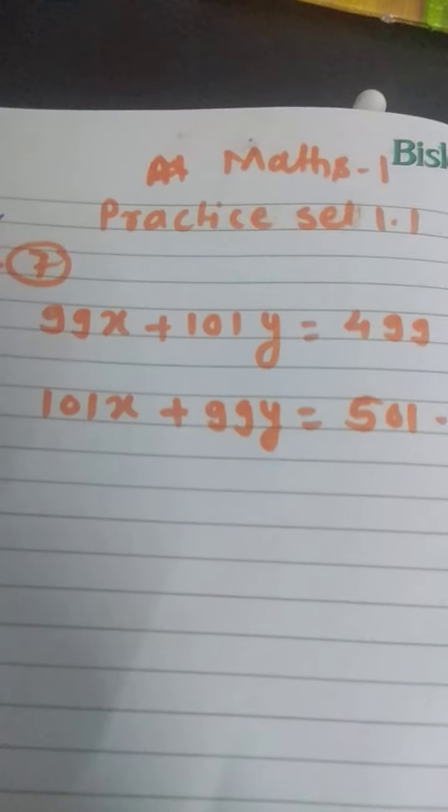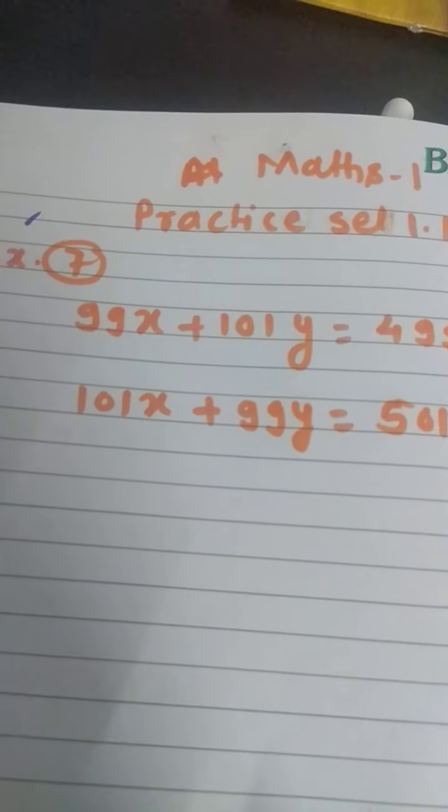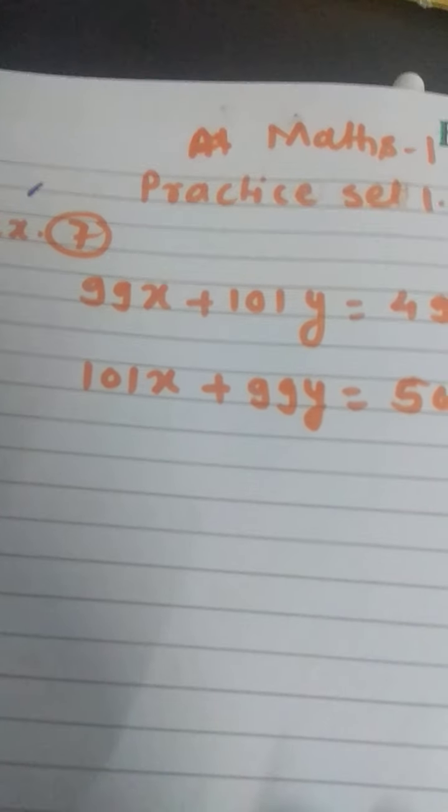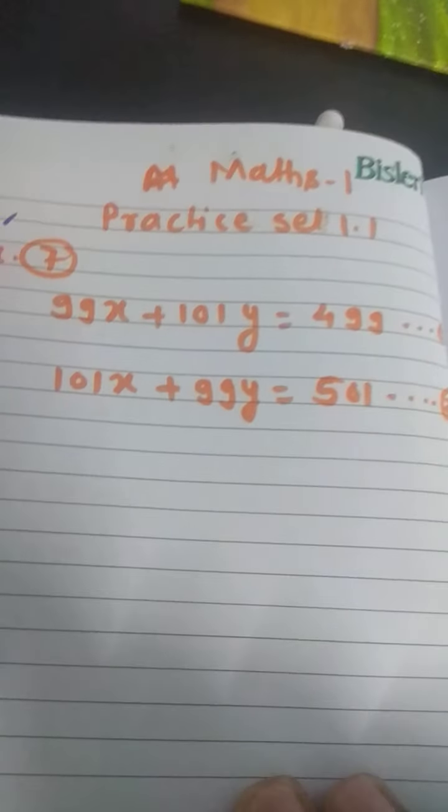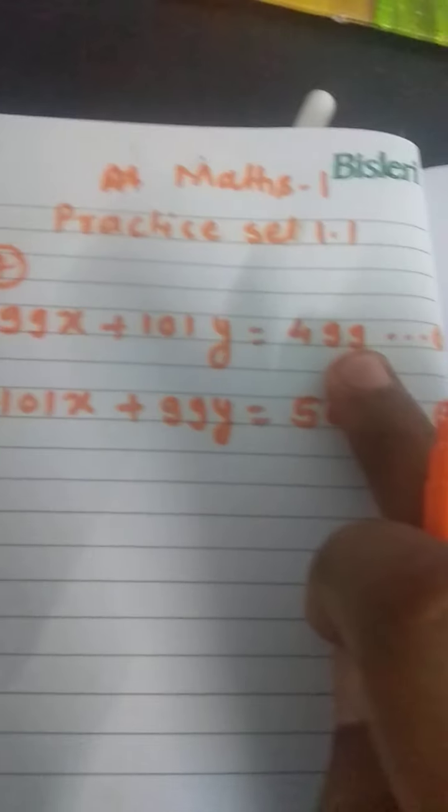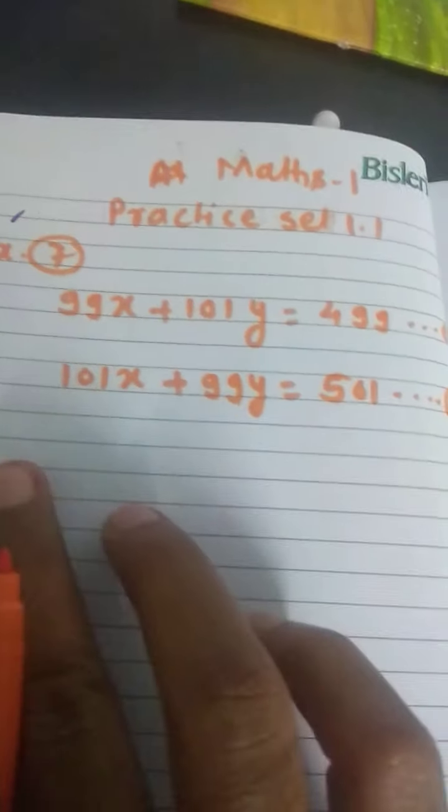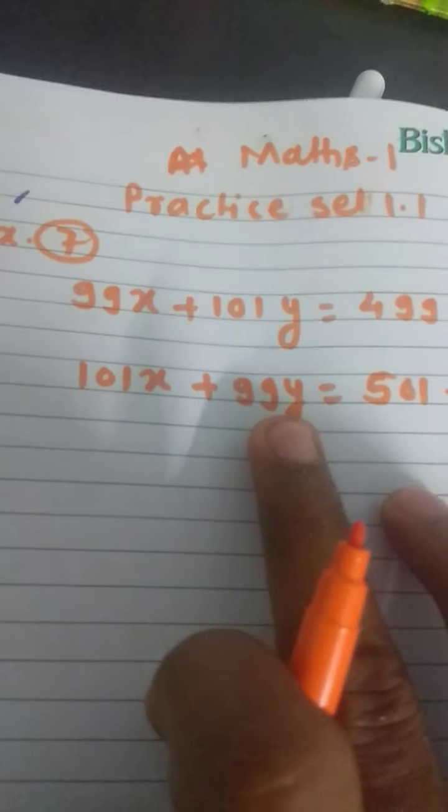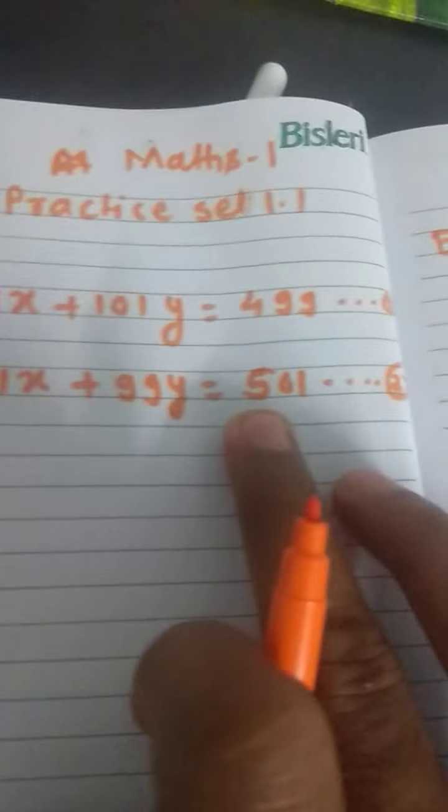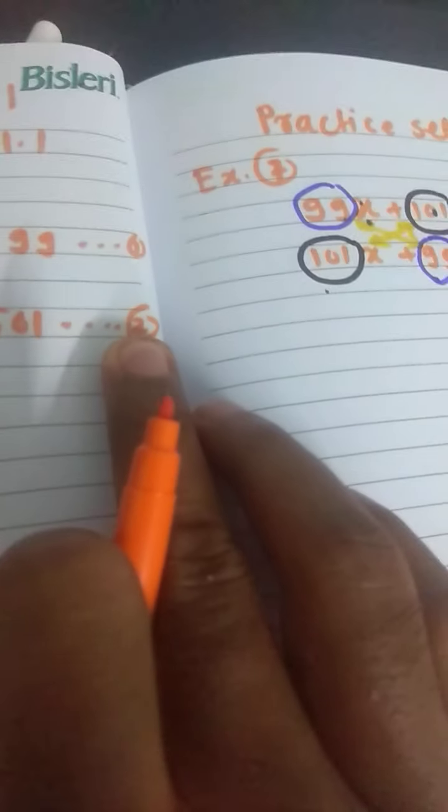Maths 1, Practice Set 1.1, Example number 7. 99x plus 101y equals 499, Equation 1. And 101x plus 99y equals 501, Equation 2.